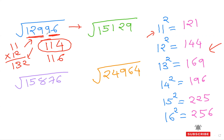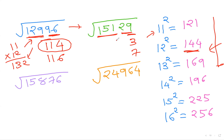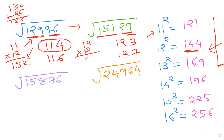Example: 15129. Last digit is 9: 3² = 9, so last digit is 3 or 7 (10 − 3 = 7). Ignore the last two digits and look at 151. 12² = 144, 13² = 169 — too big, so use 12. Possible answers: 123 or 127. Multiply 12 × 13: 13 × 10 = 130, plus 13 × 2 = 26, equals 156. Our leftover 151 is smaller than 156, so choose the smaller answer: 123.